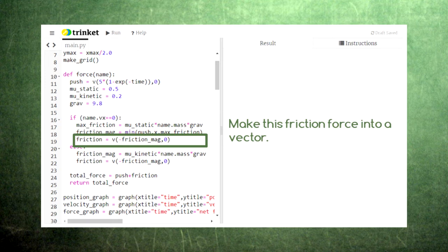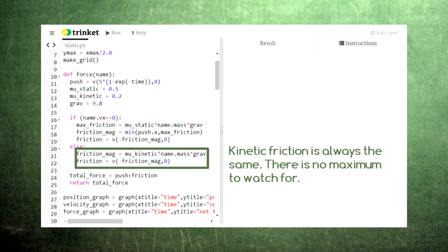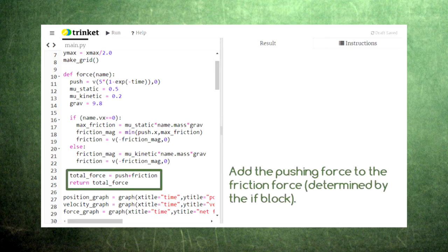In the case of kinetic friction, we simply calculate the value of the kinetic friction and create a vector for the friction force. Either way, we end up with a vector for the friction force and combine it with the force that we're pushing with.